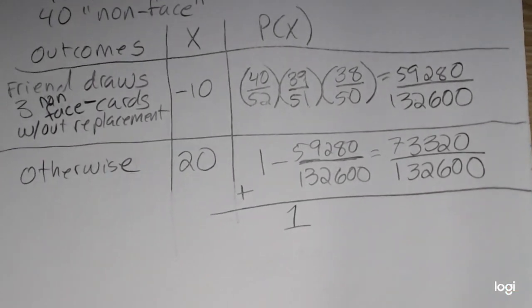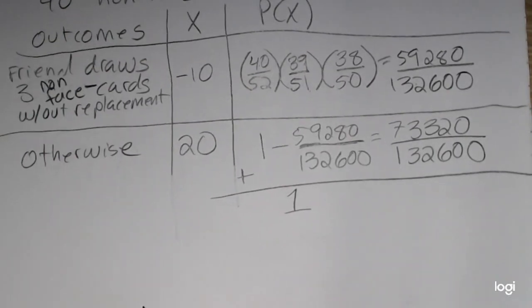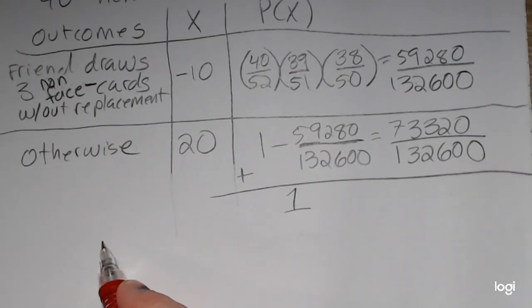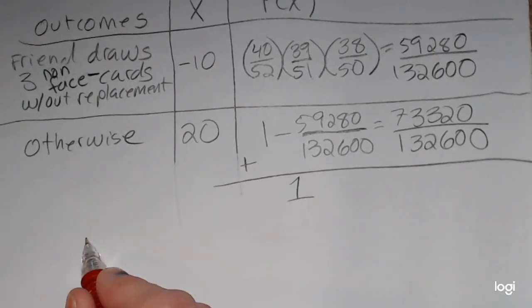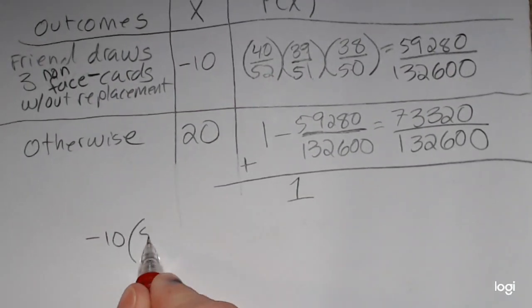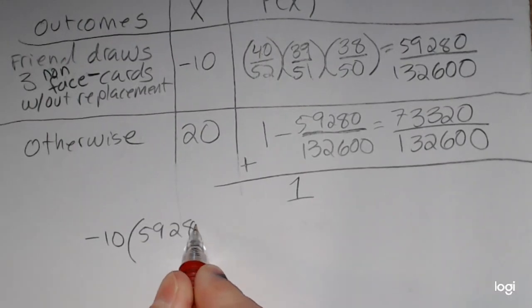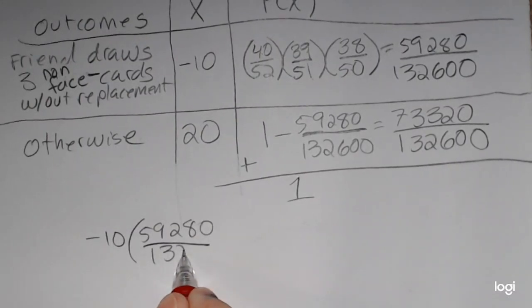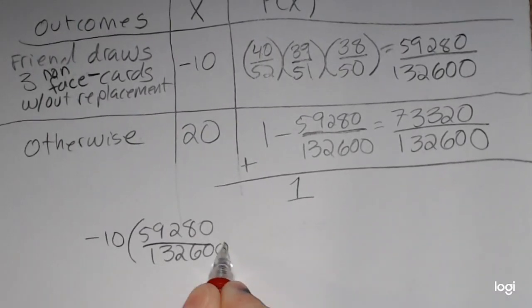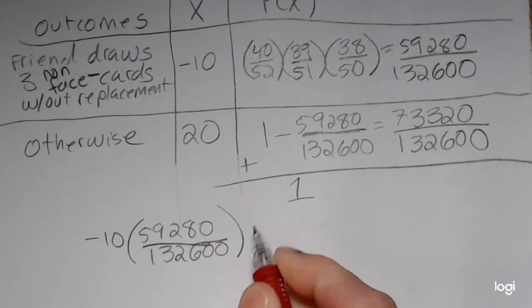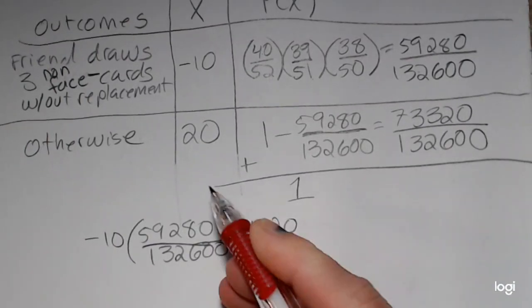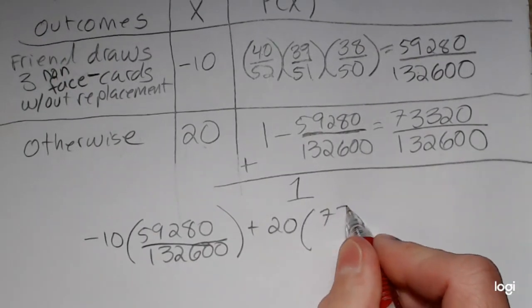Now, the expected value formula is the sum of the probability, sum of the x's times their corresponding probabilities. Very easy at this point. You just have to make sure you don't make a typo in your calculator. This expression will be negative 10 times 59,280 over that denominator, and then plus 20, this x times its corresponding probability.